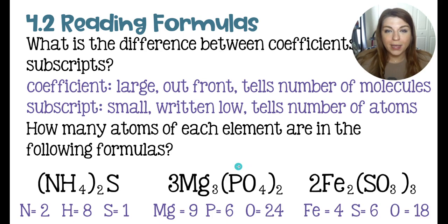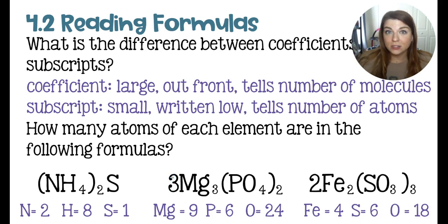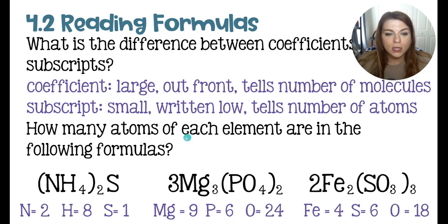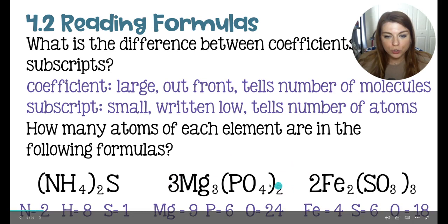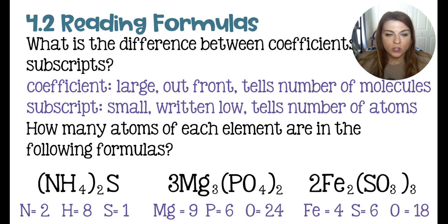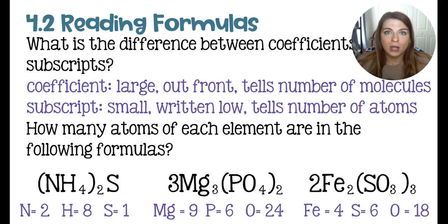In magnesium phosphate, we have nine magnesiums because we have a three out front — that's the coefficient — and it applies to all atoms in the compound. Three times three gives us nine magnesiums. Three times two times the imaginary one behind the phosphorus gives us six atoms of phosphorus. Then three times two times four gives us 24 oxygen atoms.